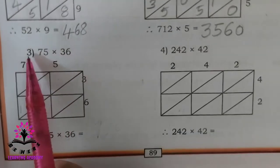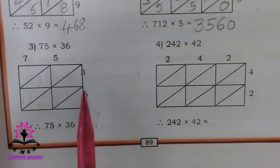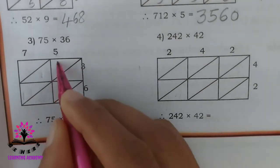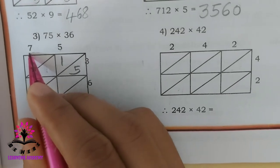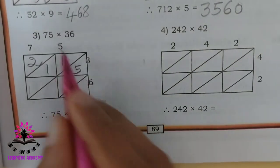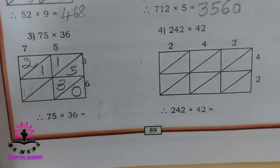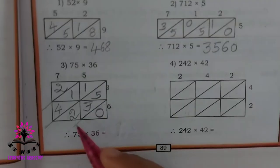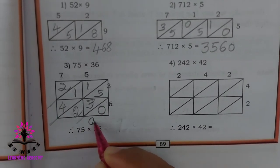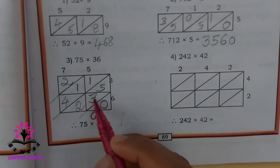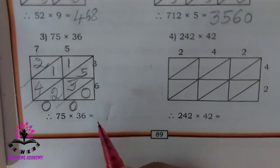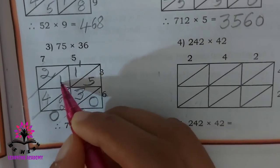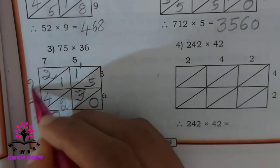The third problem from the textbook is 75 into 36. The numbers 7, 5, 3, 6 are already given. Multiply: 5 times 3 is 15, 7 times 3 is 21, 5 times 6 is 30, 7 times 6 is 42. Now extend the diagonal lines. Adding diagonals: 0, then 2 plus 3 plus 5 is 10, carry 1. Then 1 plus 1 is 2, 2 plus 1 is 3, 3 plus 4 is 7. So the answer is 2700.